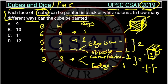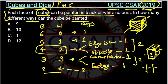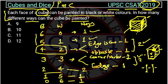The next possibility is two black and four white. This is the symmetric case of four black and two white, so there are also two ways. Then, one black and five white — there is one way. And finally, zero black faces with all six faces white — one way. Adding them all up: 1 + 1 + 2 + 2 + 2 + 1 + 1 = 10 ways total.